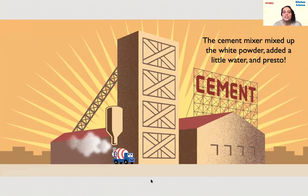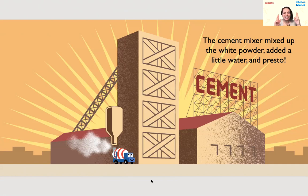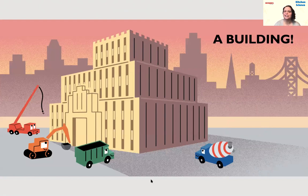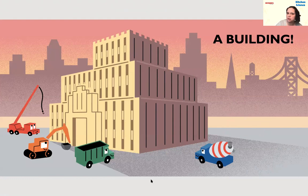The cement mixer is now at a third building, and this sign says 'cement.' I think he's going to get it right this time. The cement mixer mixed up the white powder, added a little water, and presto — a building! He mixed up the right ingredients this time to get the cement and build the building.